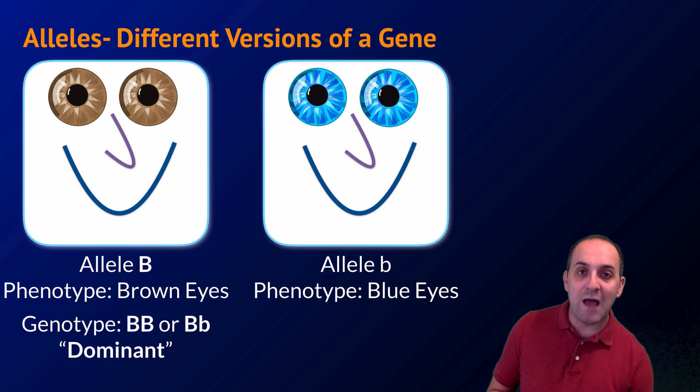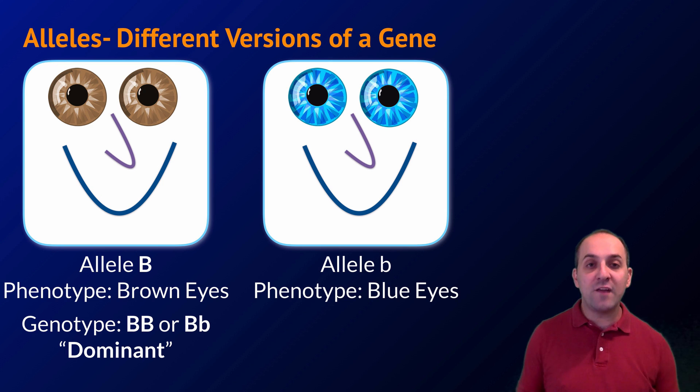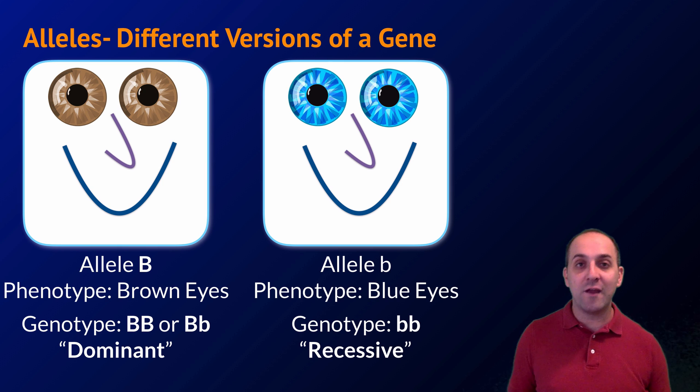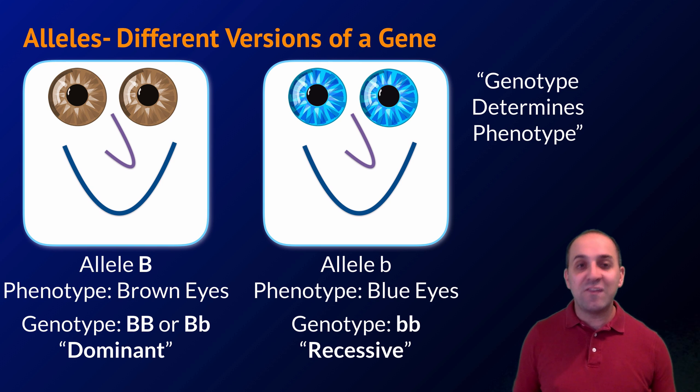The term that we use to describe this situation is dominance. We say that the big B allele is dominant over the little b allele because it only takes one copy of the big B allele to drive the production of the brown eye color phenotype. On the other hand, we say that the little b allele is recessive because you need to have two little b alleles in order to have blue eyes.